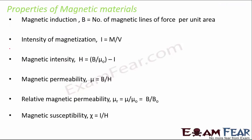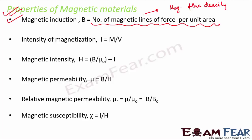The next important topic is properties of magnetic materials. Not all materials are attracted by a magnet — only those with magnetic properties. The first property is magnetic induction, denoted by capital B, defined as number of magnetic lines of force per unit area. It is also known as magnetic flux density, measured in Tesla (SI unit) or Gauss (CGS unit), where one Tesla equals 10 to the power 4 Gauss.